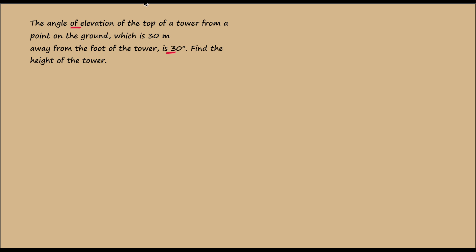We will explain the problem further while we do it. So let this be the tower for which the height has to be found. It is given that the angle of elevation from a point on the ground which is 30 meters away from the foot of the tower, so let this be the point.